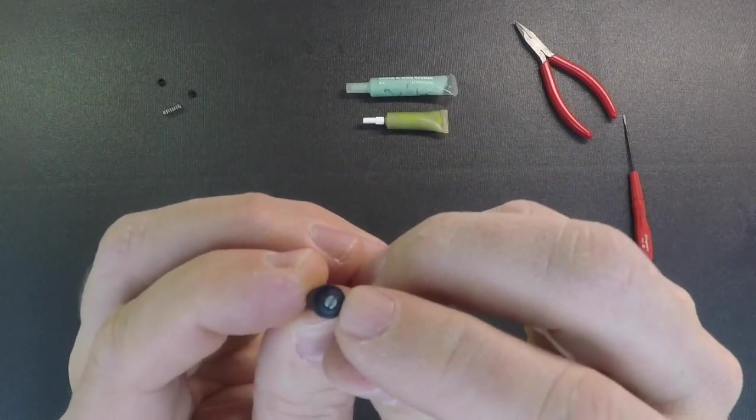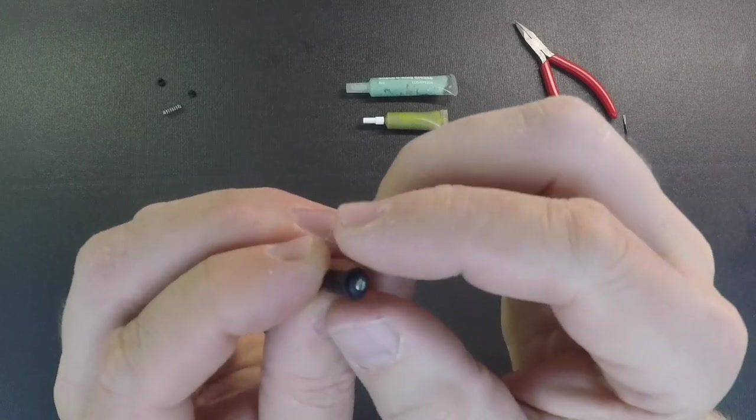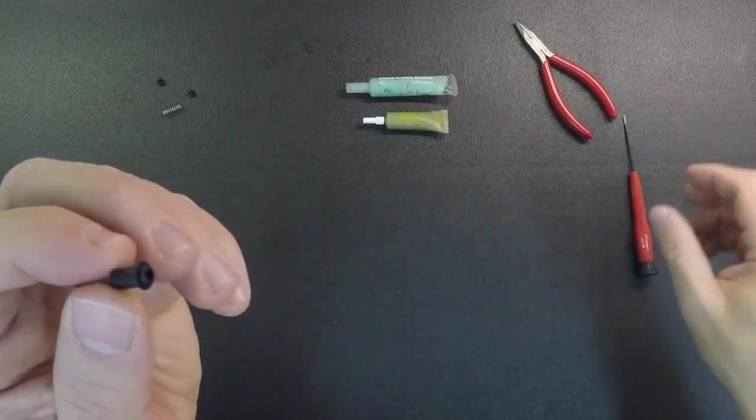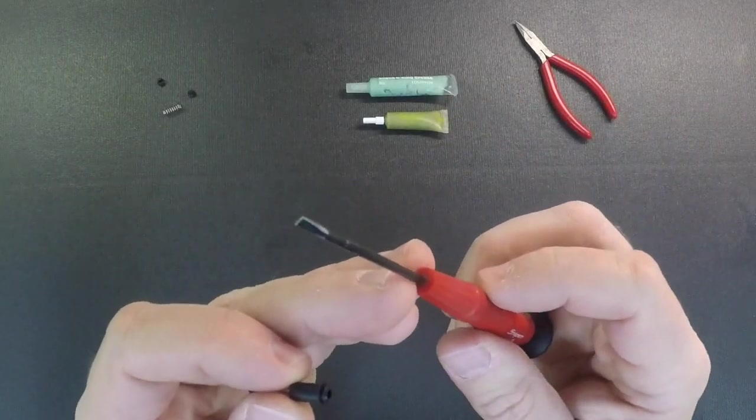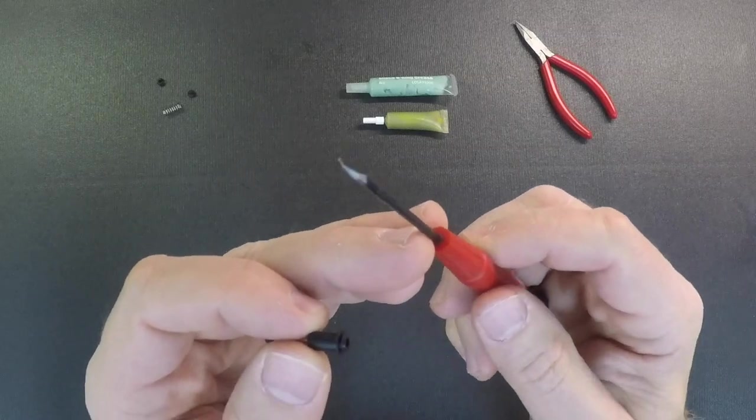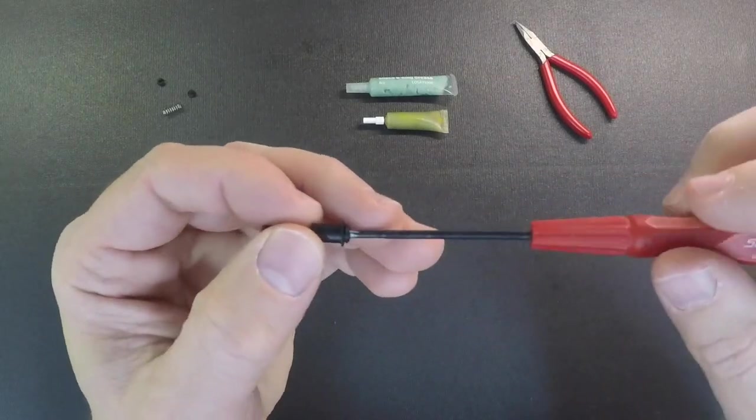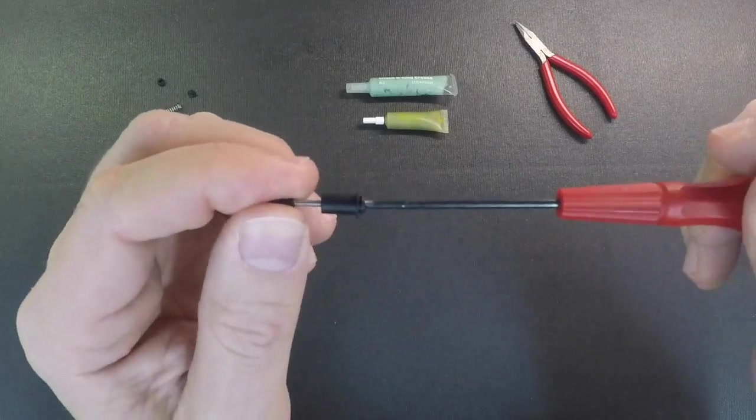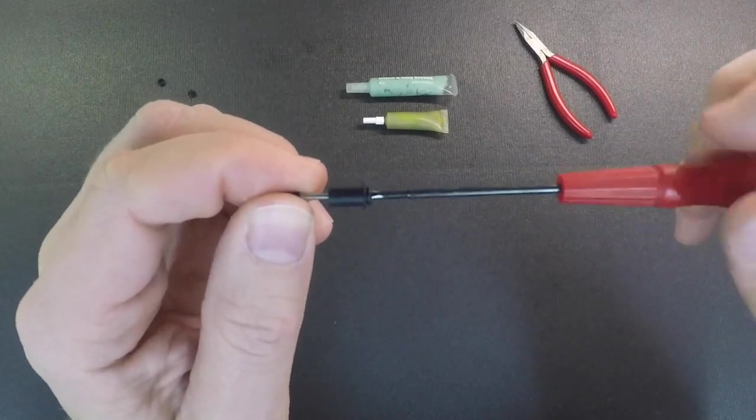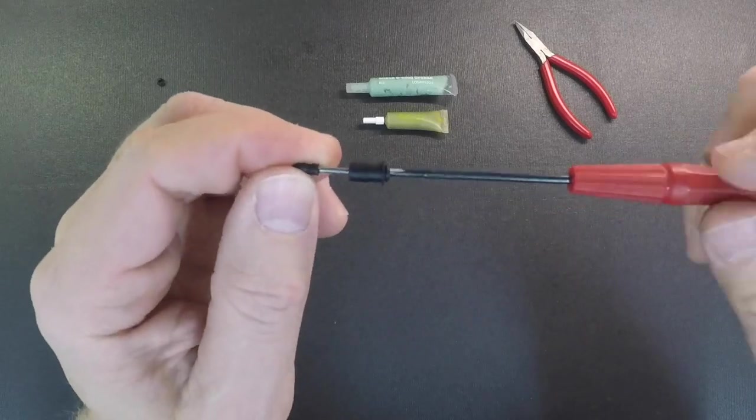We put a slot in the piston here so you can put a little straight screwdriver in there. Just grab a really small straight screwdriver, put it down inside the shock body, find that slot on the piston, and then just unscrew about three or four turns. You don't need to go all the way.